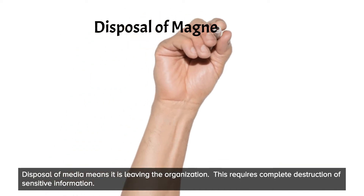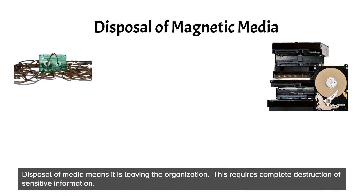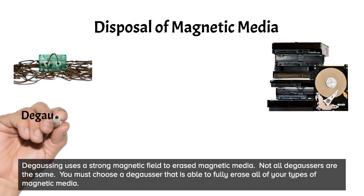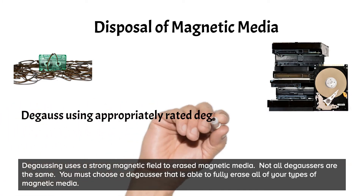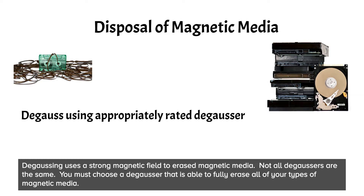Disposal of media means it is leaving the organization, which requires complete destruction of sensitive information. Degaussing means using a strong magnetic field to erase magnetic media. Not all degaussers are the same — you must choose a degausser that is able to fully erase all of your types of magnetic media.